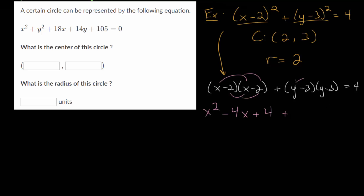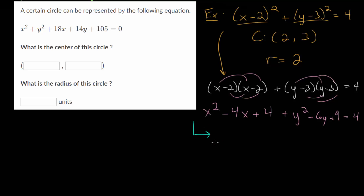And here we have the y distributing to both and the minus 3 to both, giving us y squared minus 3y minus 3y, so that's minus 6y, and minus 3 times minus 3 is positive 9. If we put everything on one side of the equation, we subtract 4 on each side and rewrite this as x squared minus 4x plus y squared minus 6y plus 9 is equal to 0. This would be an example of the expanded equation for a circle.